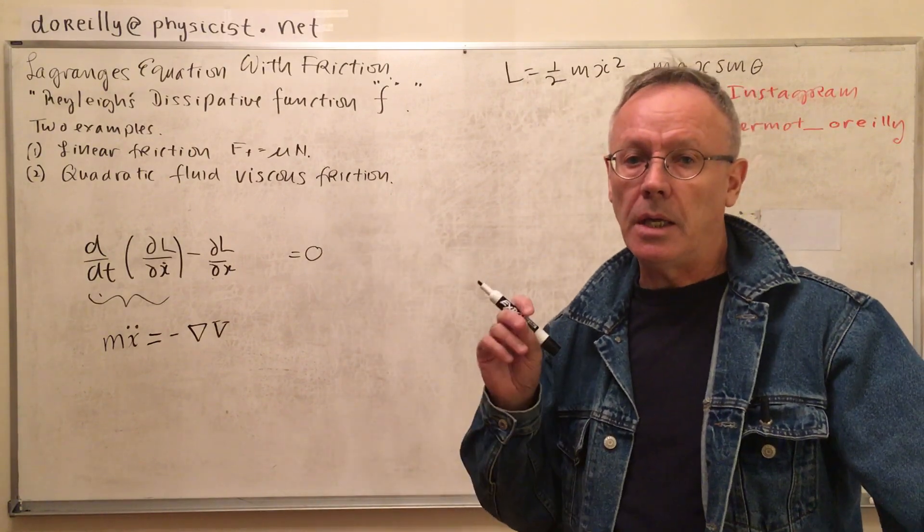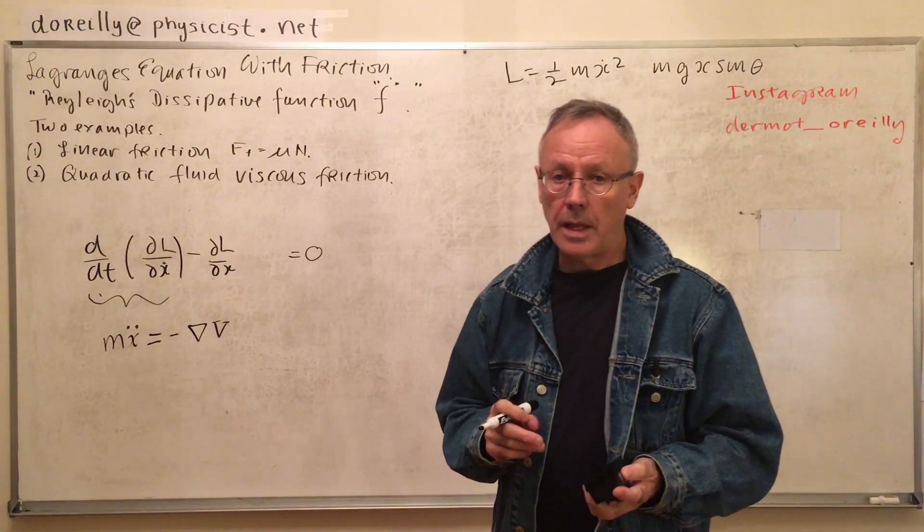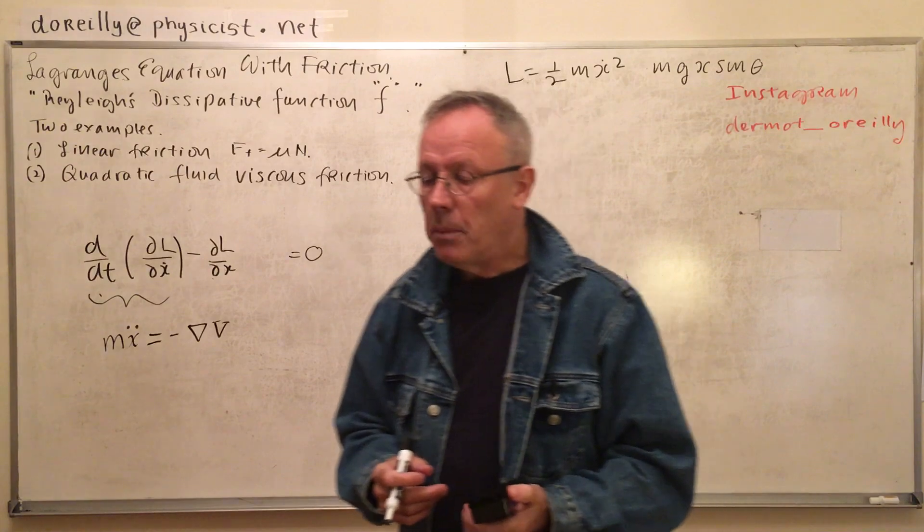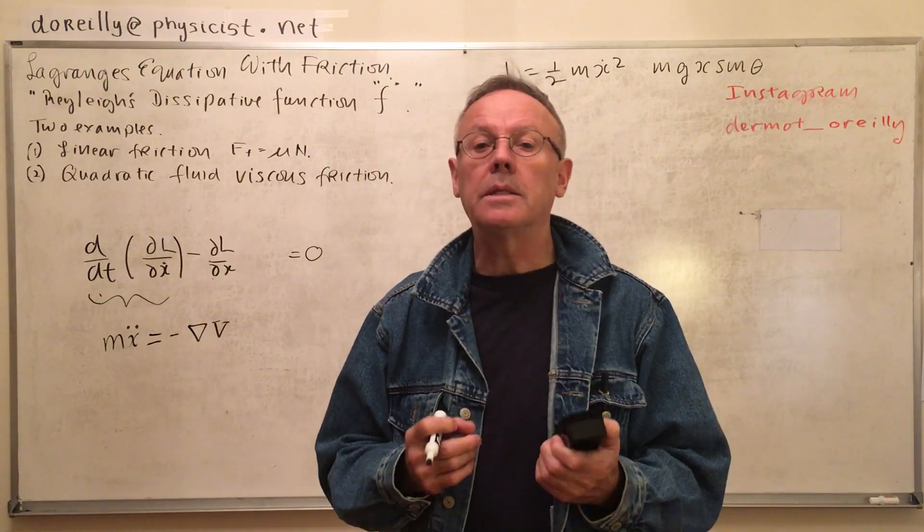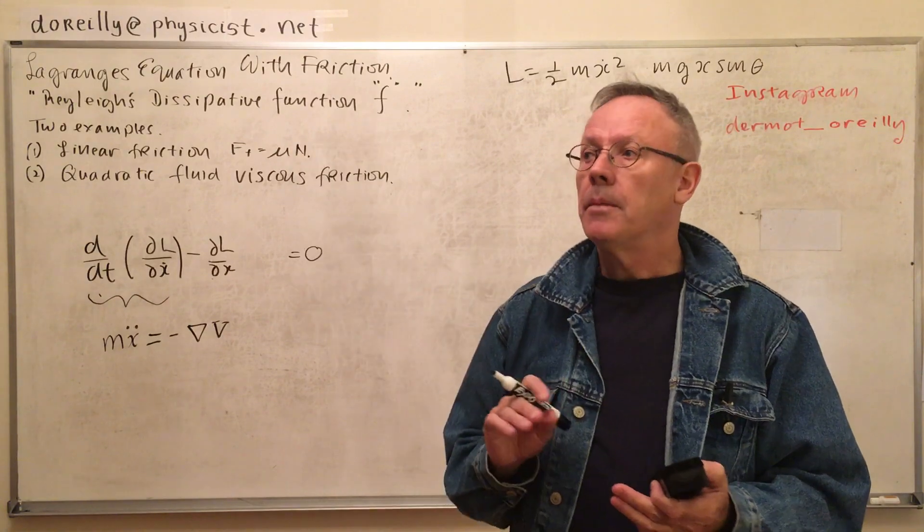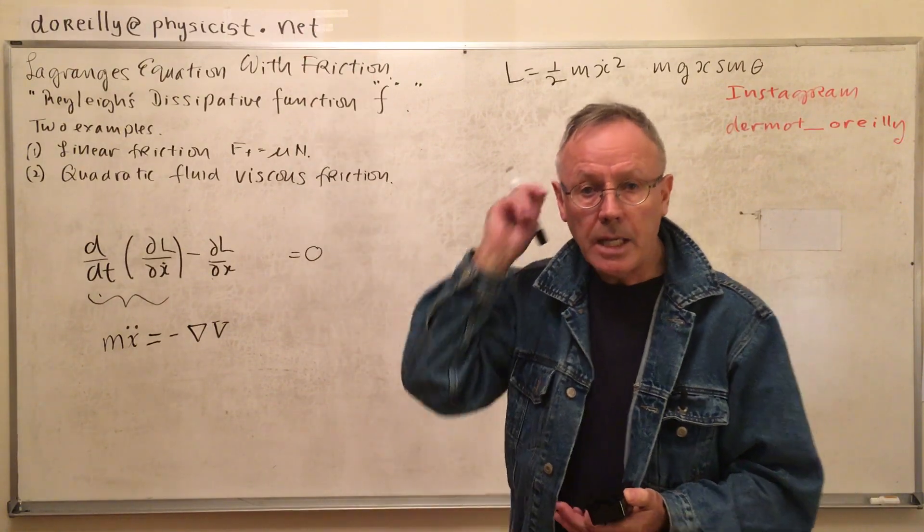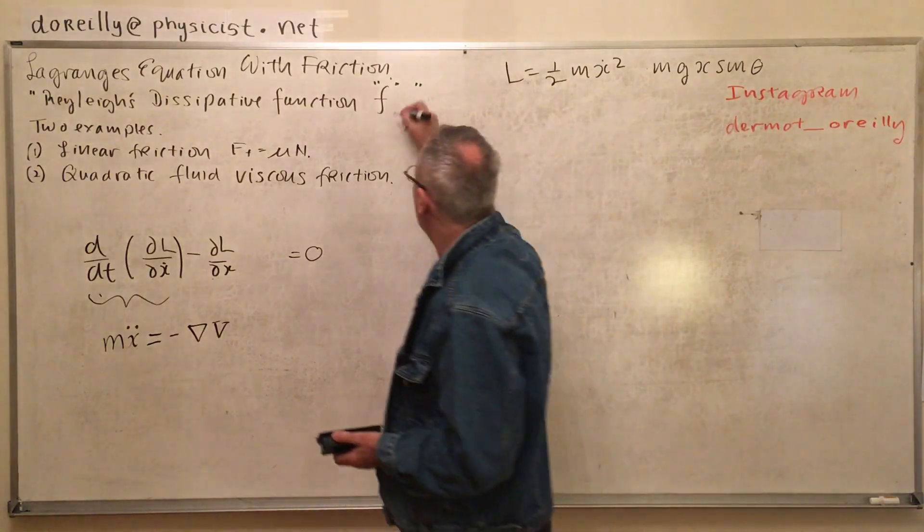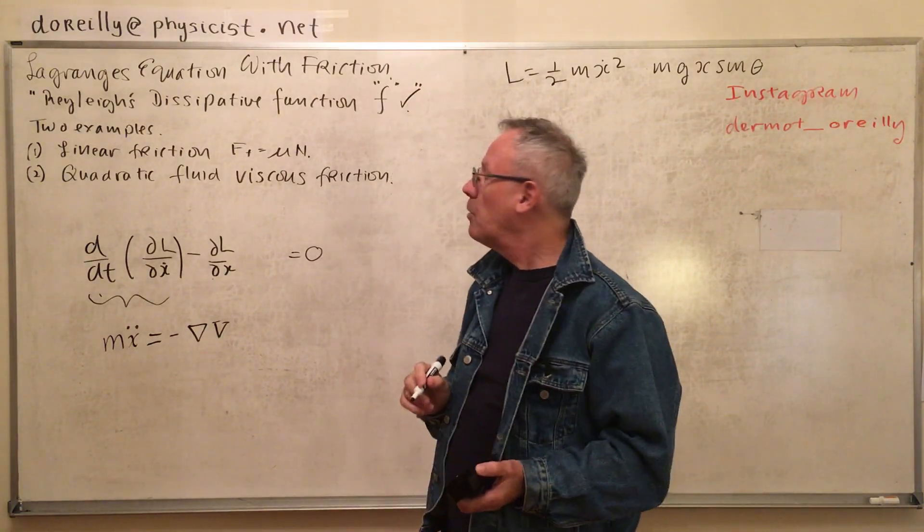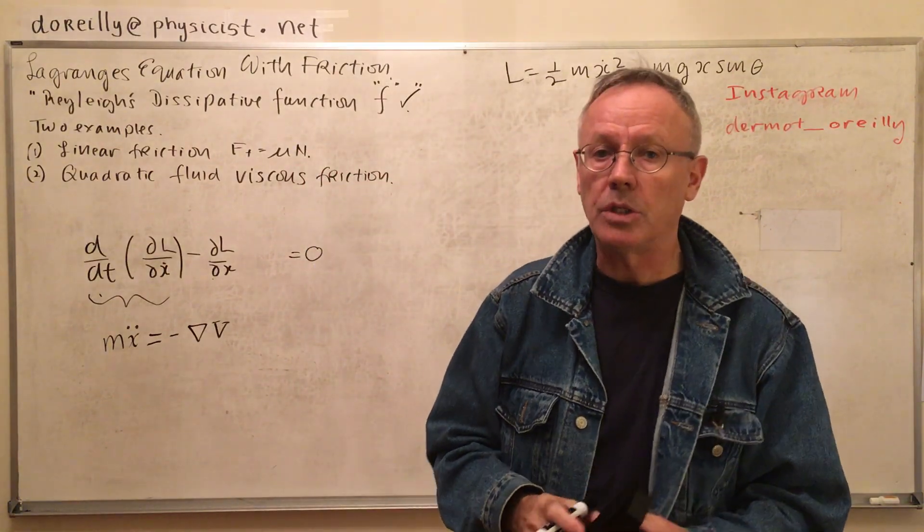If the system is not path independent, we're taking energy in or putting energy out of the system. We have to include a term to account for that. For example, friction might extract energy from the system at a constant rate. To account for that we include what we call Rayleigh's dissipation function.